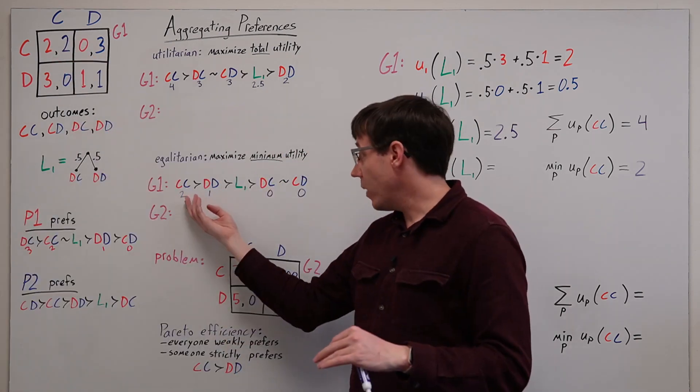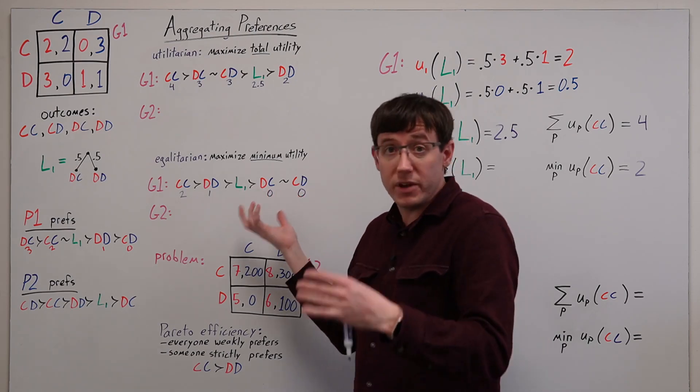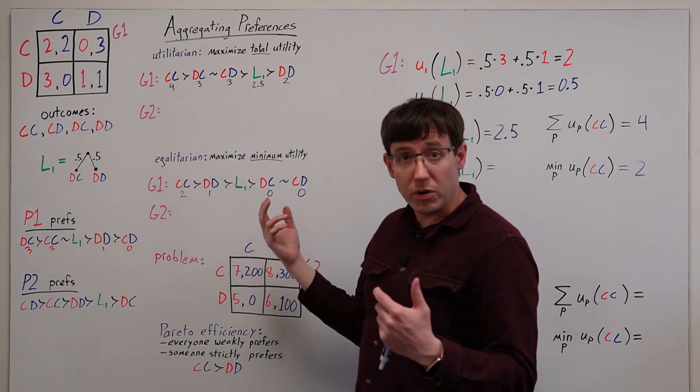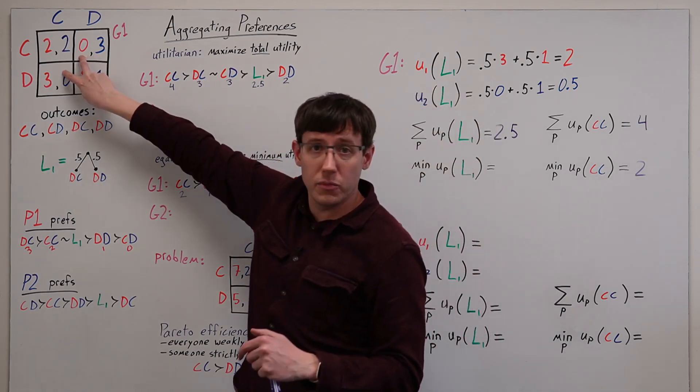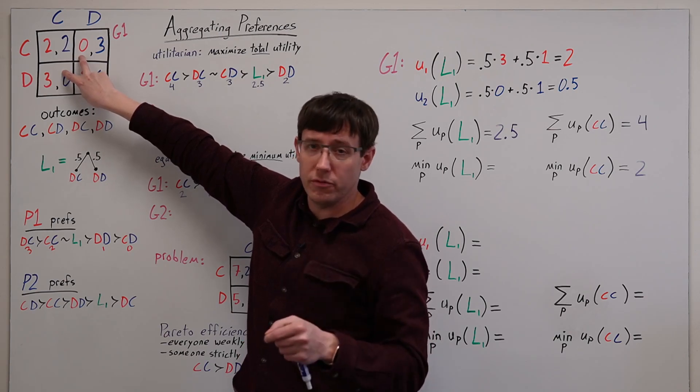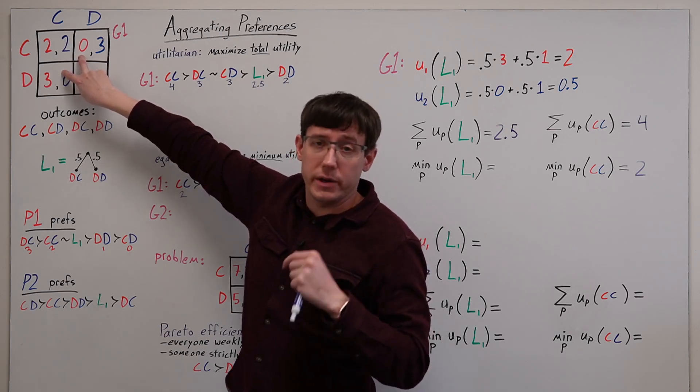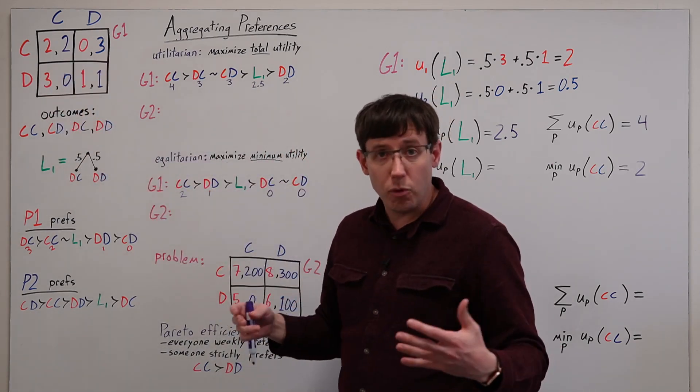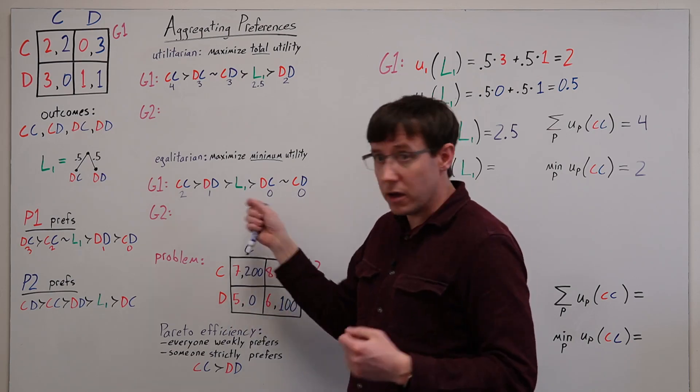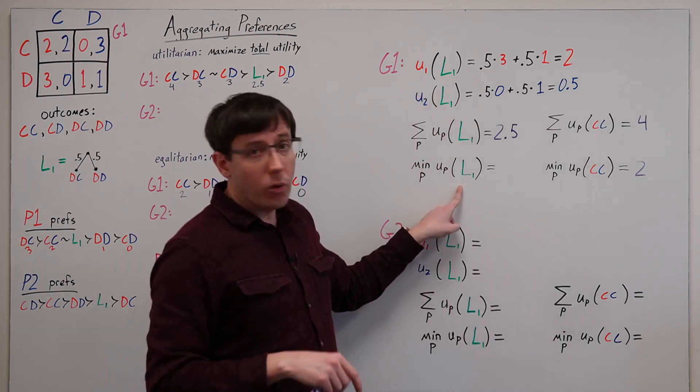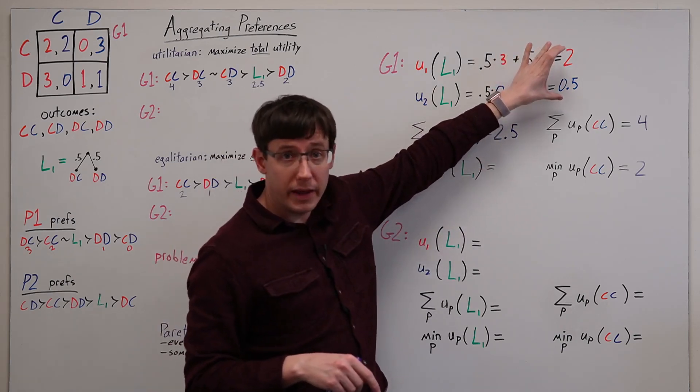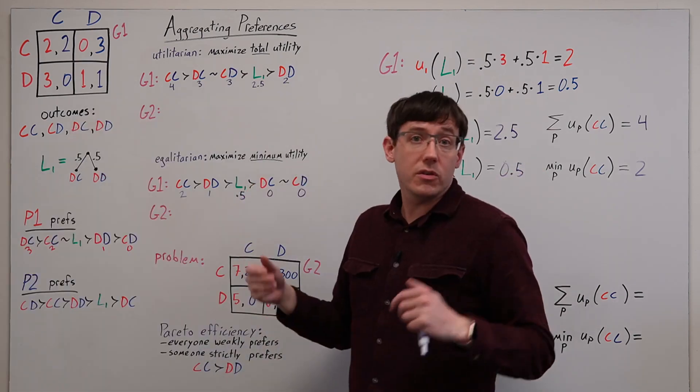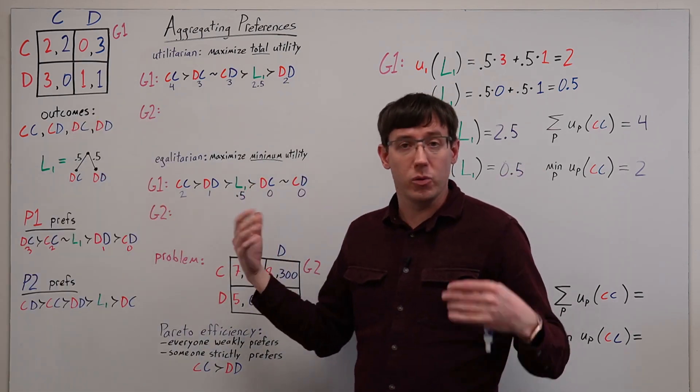And so again, we have a way of ranking the outcomes, but we've gotten a different result than under the utilitarian criterion, which preferred these off-diagonal outcomes with a total utility of 3, whereas the egalitarian criterion doesn't like them since they have a smaller minimum utility. Just like before, we can also evaluate lotteries according to this criterion, where for L1, the minimum over the players of the utilities is 0.5. So this also places the lotteries within our outcome rankings.